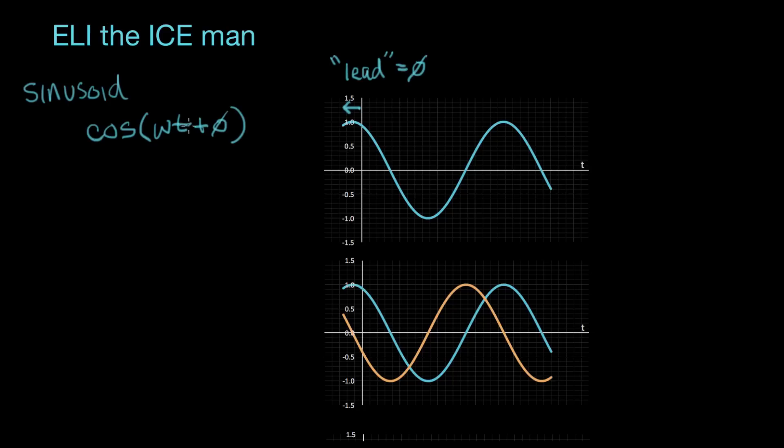So when these kind of signals are input into our favorite components, we're going to get a relationship between the voltage and the current in those components, and it's related by the impedance. We've defined the idea of impedance as the ratio of voltage to current. We gave that the symbol Z.